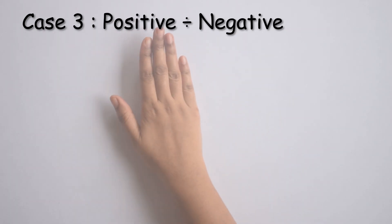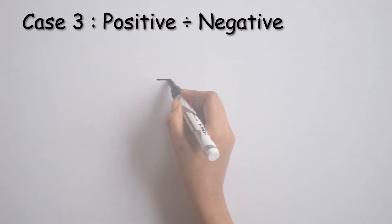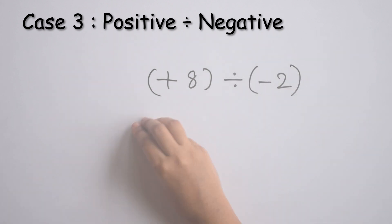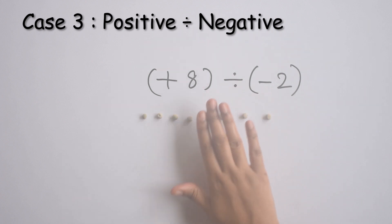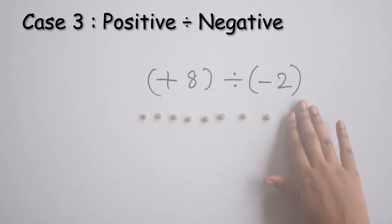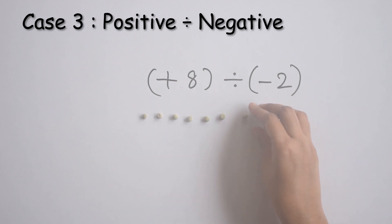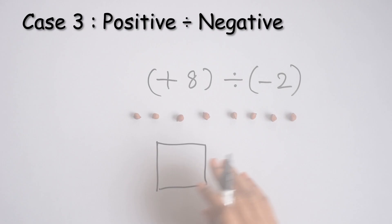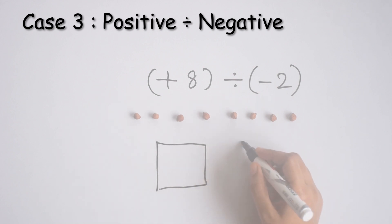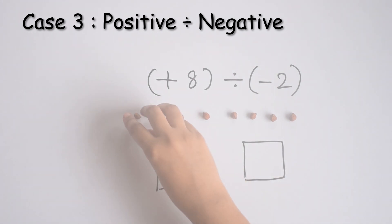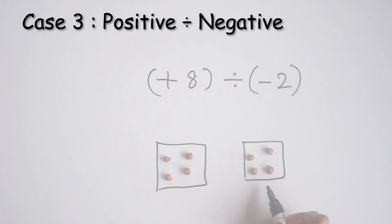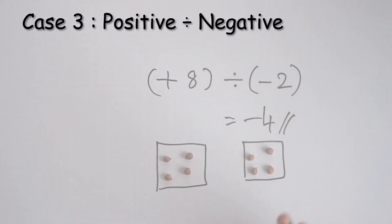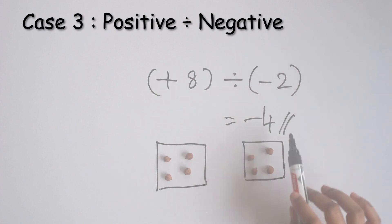Let's take the next case — positive integer divided by negative integer. For example, if we have positive 8 divided by negative 2. This is positive 8 divided into two groups, but since 2 here has a negative sign, that means we have to change the color. So, we will replace the green peas with chickpeas. We can now divide this into two equal groups, so let's draw two boxes. How many do we have in each group? We have 4 in each group, and since they are chickpeas, the symbol is negative. So, positive 8 divided by negative 2 is equal to negative 4.